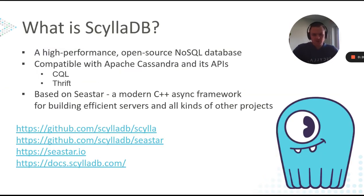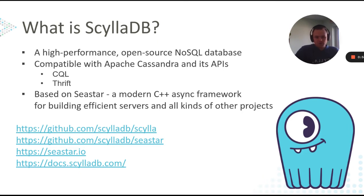Before I talk about Alternator itself, I'll mention ScyllaDB, the database on top of which Alternator is built. ScyllaDB is an open source NoSQL database focused on maximizing performance and fully utilizing the underlying hardware. Its original goal was to provide full compatibility with the Cassandra API, which is already long done. An important difference between ScyllaDB and Cassandra is that we're built on top of a high performance async C++ framework called C-star, also implemented by our company. The framework is also open sourced under a permissive license. A ScyllaDB cluster, similarly to Cassandra, acts as a kind of distributed hash table, where each server in the cluster is responsible for part of the data, which is also replicated.